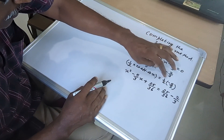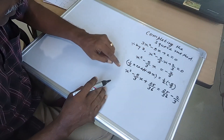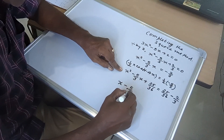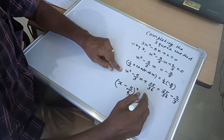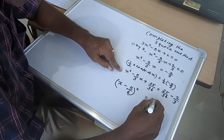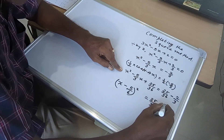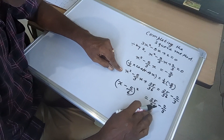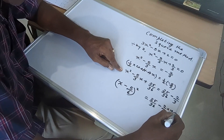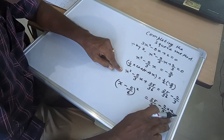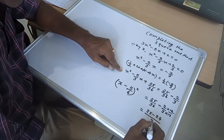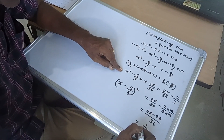The squared term is added to both sides. Now the left side is in the form of (x minus 5/6)². On the right side we have 25/36 minus 2/3. We make the same denominator — multiply 2/3 by 12/12 — giving us 25 minus 24 over 36, that is 1/36.